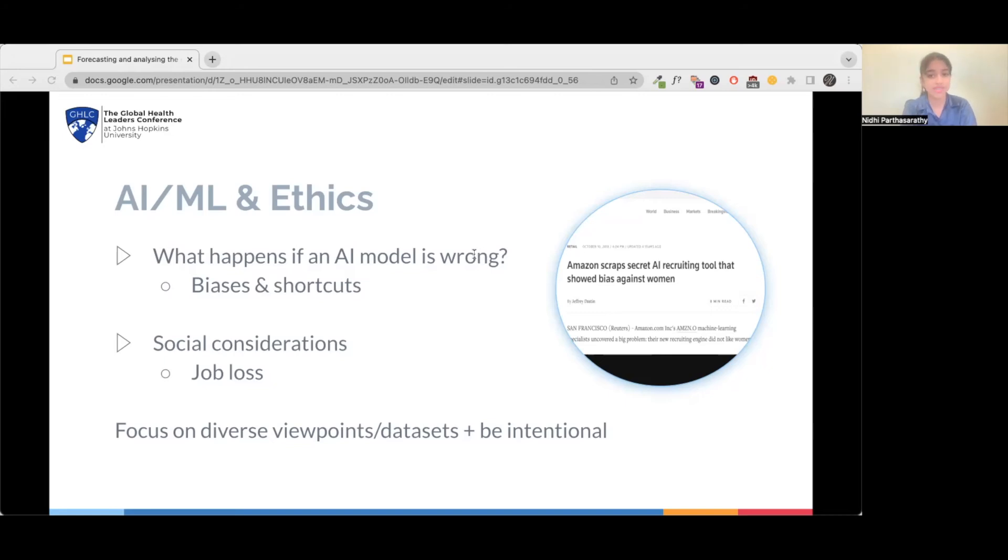There are also many social considerations when it comes to AI. What if AI becomes so powerful that it starts replacing people's jobs? These problems can be solved, though. Being intentional and thoughtful about AI ethics, and particularly focusing on diversity in viewpoints and datasets, could significantly help with the problem of bias.